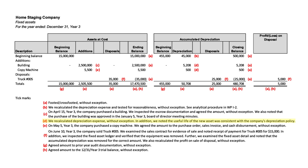They did that not only for the building, but also for the copy machine, which is discussed in tick mark E. On May 5th, they bought a copy machine. In this case, they were able to agree the amount back to the purchase order, invoice, and disbursement.